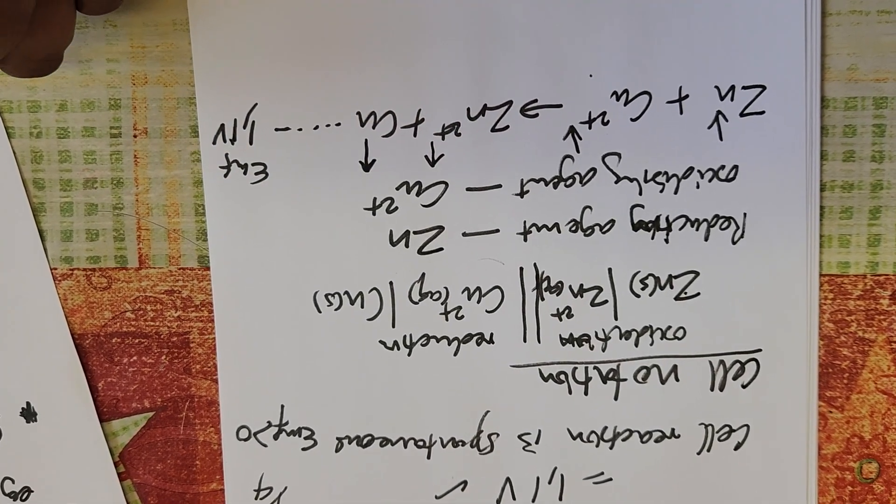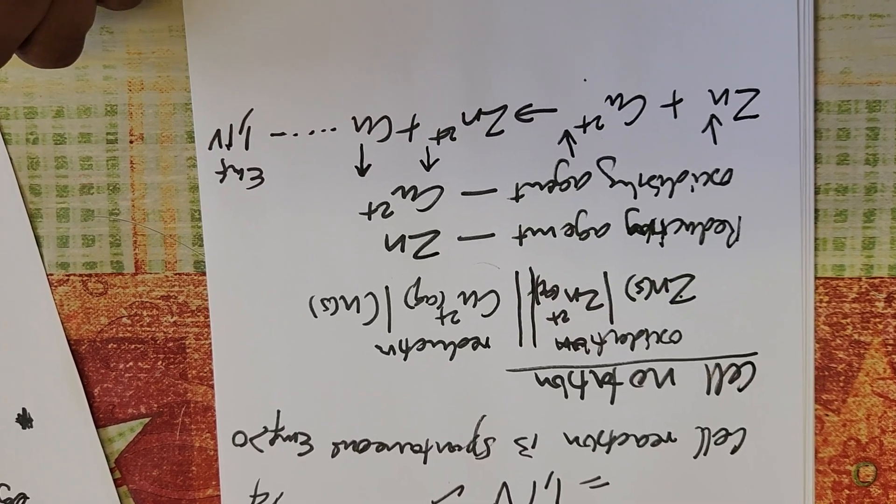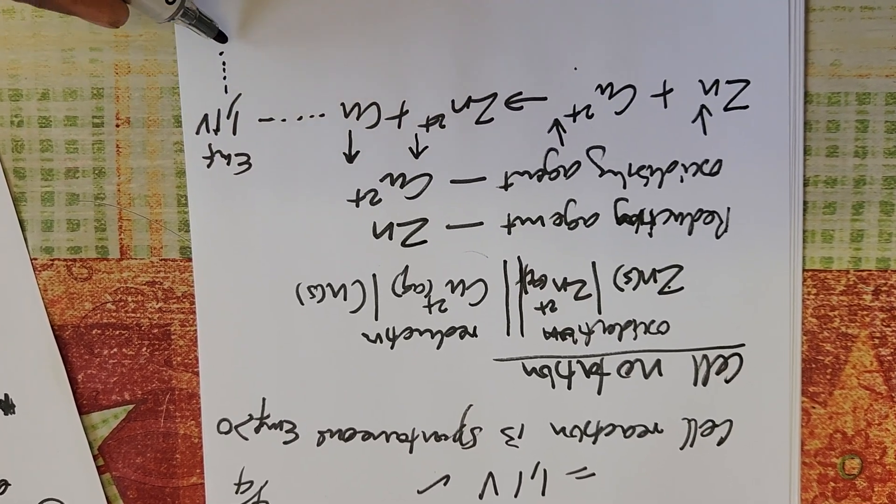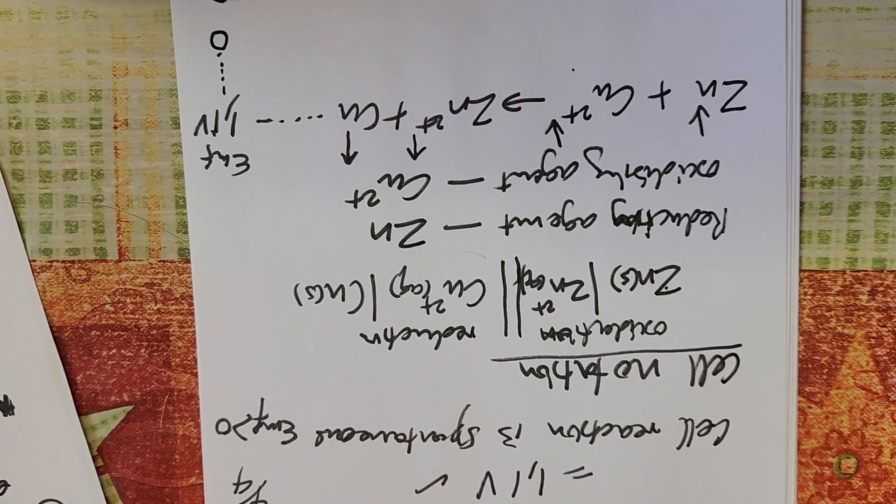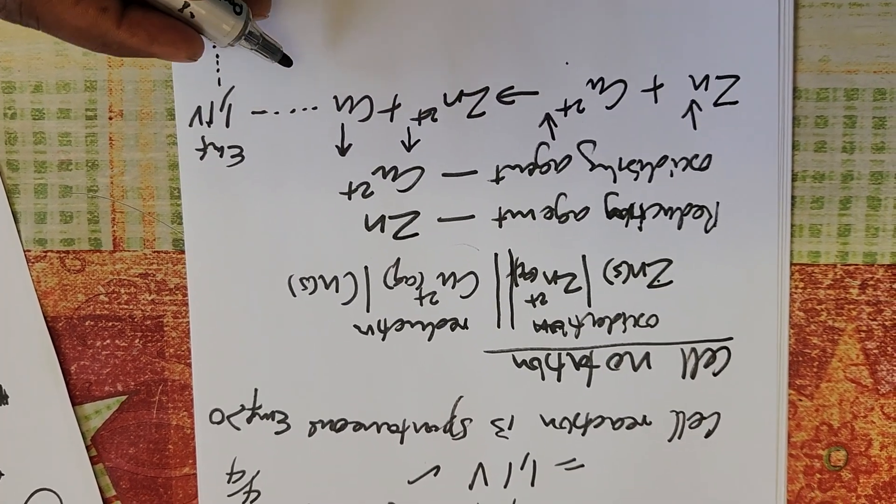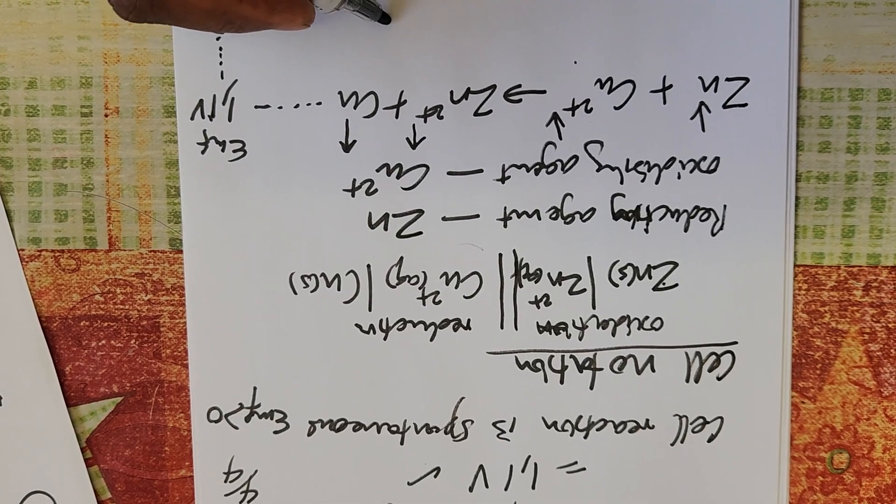The mass of copper will increase, and the EMF started from this one—it will reach zero. When the EMF reaches zero, we say the cell has reached equilibrium.